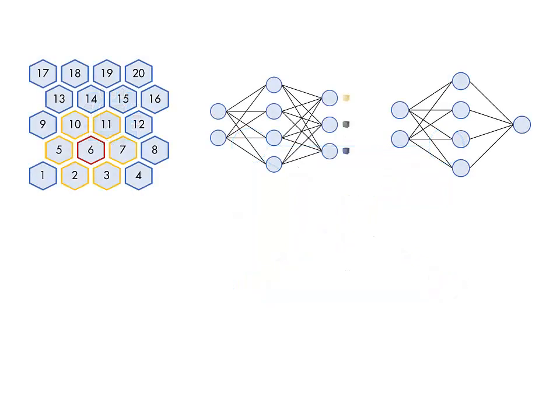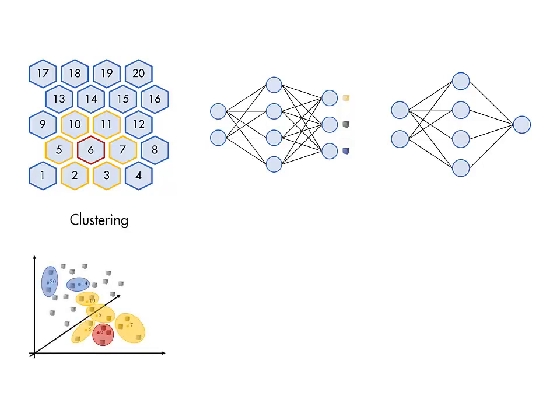Different network architectures allow for neural networks to be applied to different kinds of problems. Self-organizing maps can be used for clustering and finding structure in data.